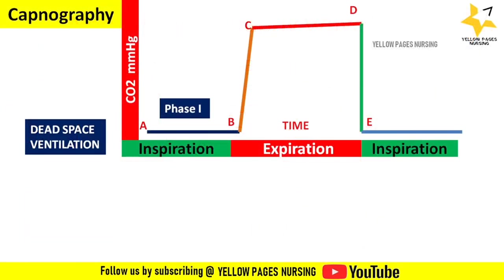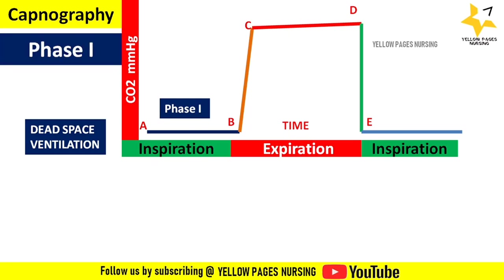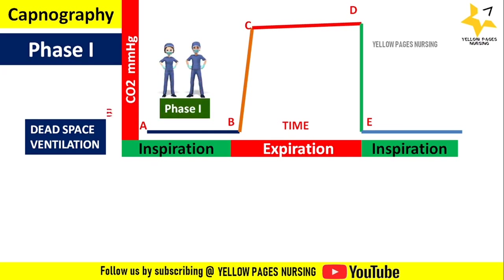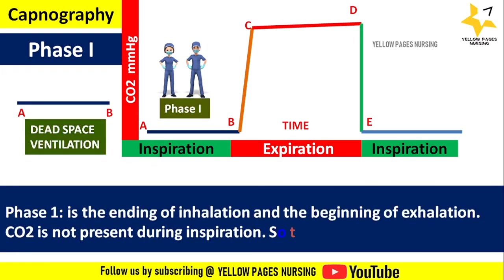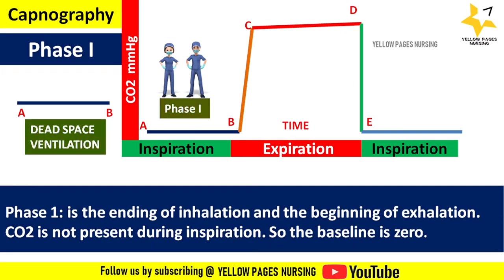This is the normal capnography waveform. Phase 1 starts from A to B, otherwise called dead space ventilation, because there is no gas exchange in the upper airway — which is often called the dead space. In phase 1, there is ending of inhalation and beginning of exhalation, and carbon dioxide is not present during inspiration; hence the baseline is zero.